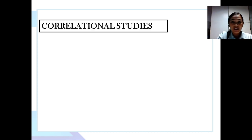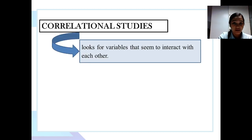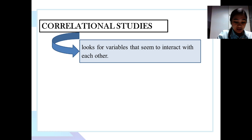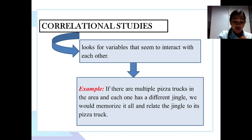Correlational studies look for variables that seem to interact with each other. When you see one variable changing, you have a fair idea of how the other variable will change. For example, if there are multiple pizza trucks in the area and each one has a different jingle, we would memorize them all and relate the jingle to its pizza truck. This is what correlational research precisely is.